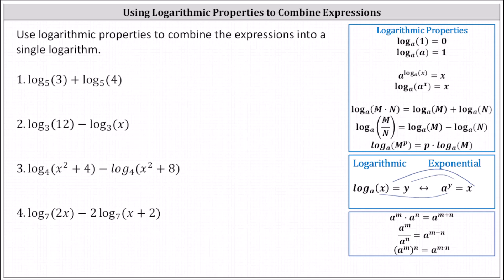Because we have a sum of two logs, we should be thinking about the product property of logarithms, which is this property here: log base a of m plus log base a of n equals log base a of the product of m and n.